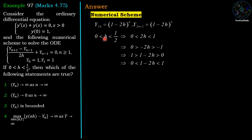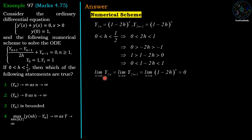We are given 0 < h < 1/2, which can be rewritten as 0 < 2h < 1. Multiplying by -1 and reversing inequalities: 0 > -2h > -1. Adding 1 throughout: 1 > 1 - 2h > 0, so 1 - 2h lies strictly between 0 and 1. Therefore, as n → ∞, (1 - 2h)^n → 0, so both lim_{n→∞} y_{2n} = 0 and lim_{n→∞} y_{2n+1} = 0.